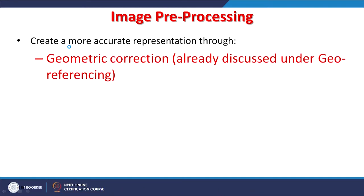How to accurately represent these images: once we get the data, in the preprocessing stage we have had discussion about geometric corrections. Better and more accurate georeferencing will lead to better further processing or utilization of that image or dataset. Geometric corrections and georeferencing play a very important role in remote sensing as well as in GIS.